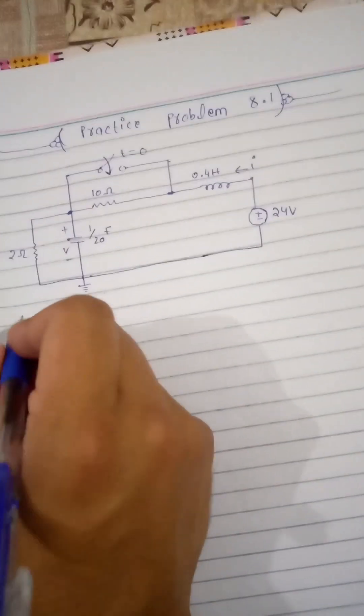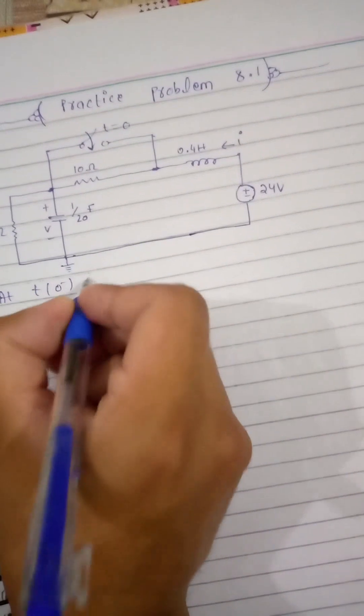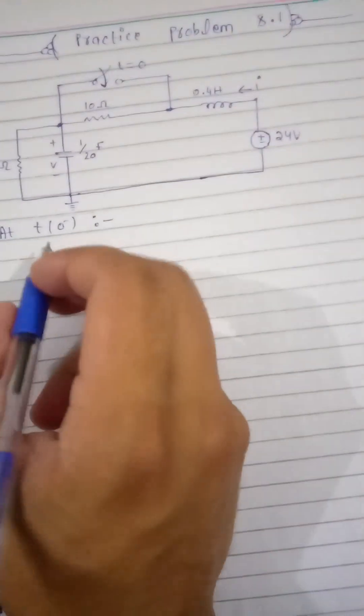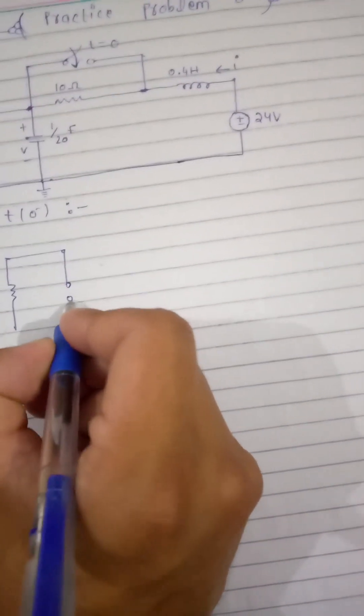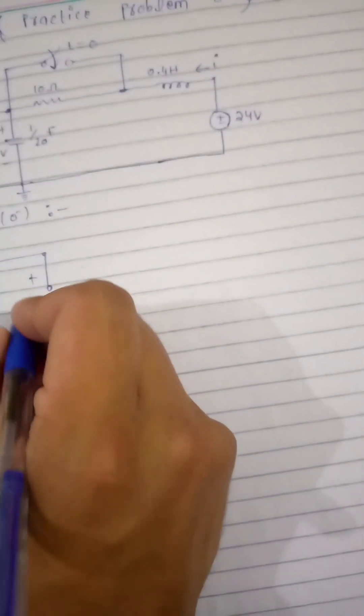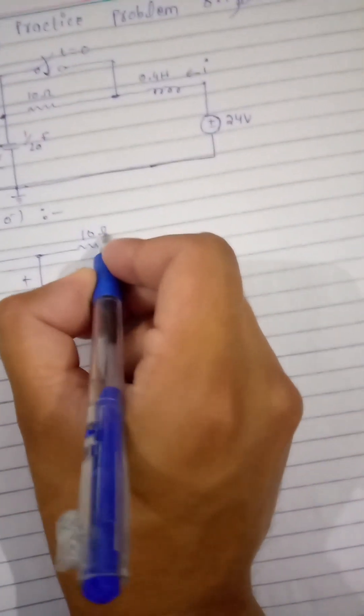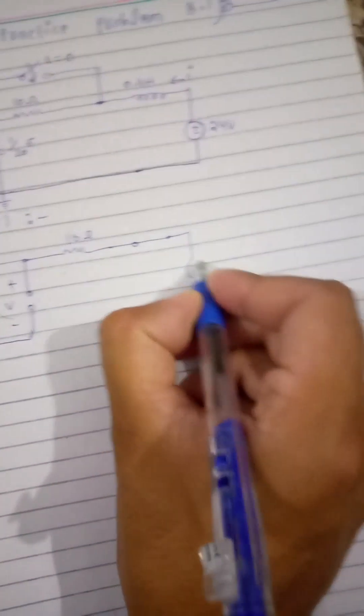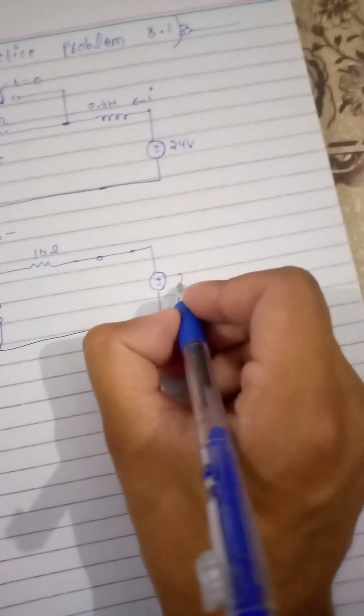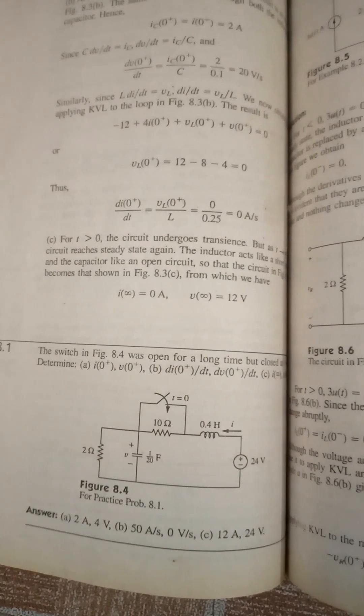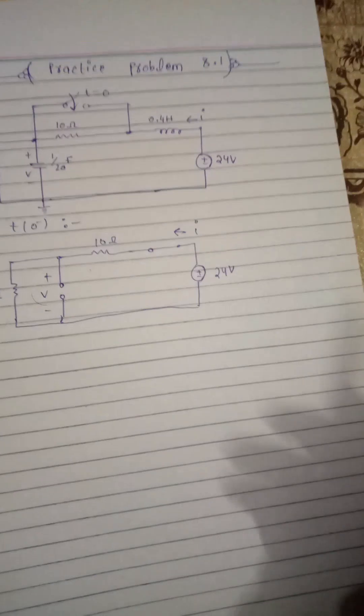As stated, the switch was open for a long time, so at t = 0⁻ — before the switch was closed — the circuit consists of the 2 ohm resistor. The capacitor is an open circuit and the inductor is a short circuit, with the 10 ohm resistor and a 24 volt voltage source. In part a we have to find i(0⁺) and v(0⁺), so we first go to the minus case.